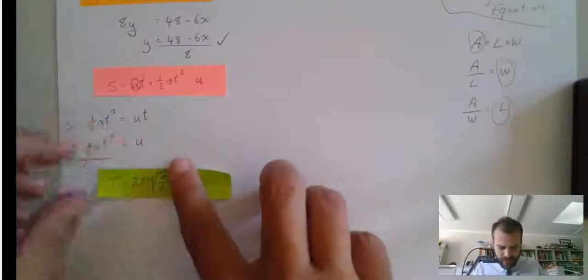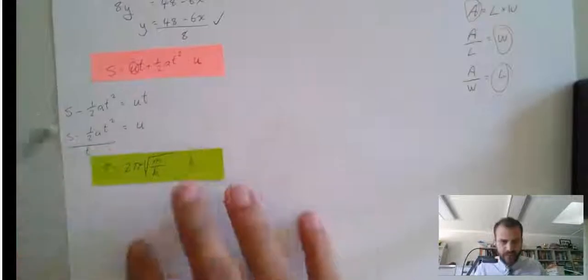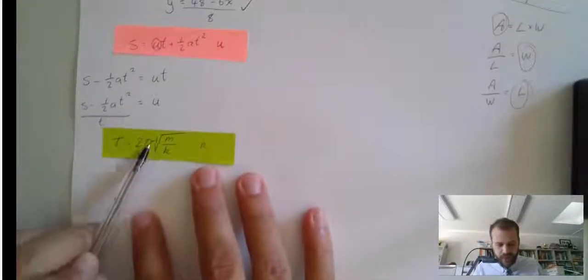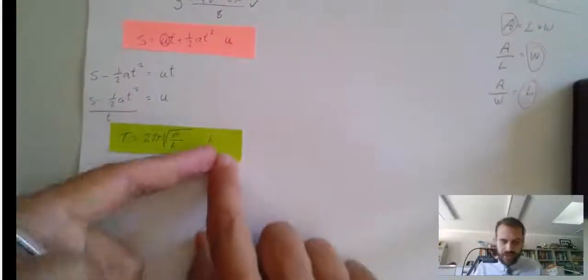Finally, this one's really difficult. t equals 2 times pi times the square root of m over k. And we want to make k the subject.